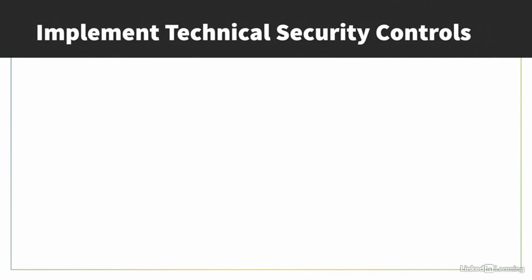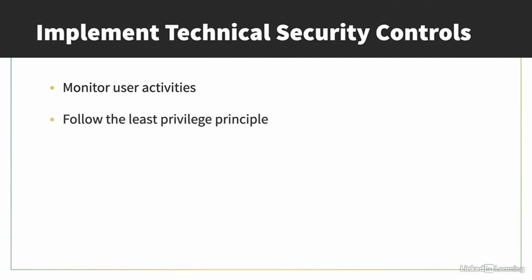Let's look at some technical security controls to protect against insider threats. To avoid having insider threats go undetected, you should monitor user activities, especially on your critical assets. One of the best tools for doing this is a Security Information and Event Management System, or SIEM. A SIEM will collect and analyze event log activity from all your systems and can help identify suspicious or malicious activity. When it comes to access, follow the least privileged principle — only grant the bare minimum of privilege someone needs to do their job. And use network segmentation to isolate the critical assets from the rest of the network.